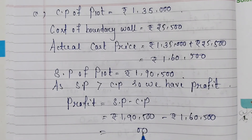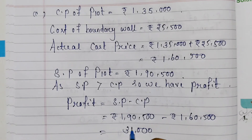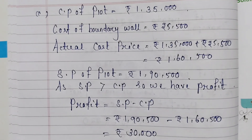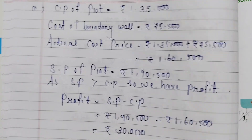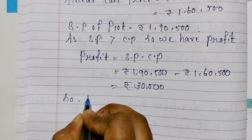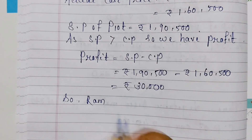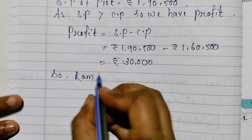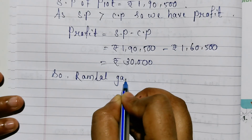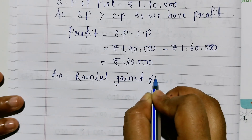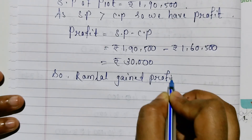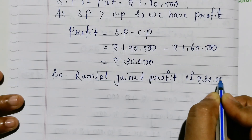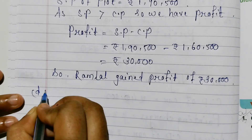Profit equals SP minus CP: 1,90,500 minus 1,60,500 equals 30,000 rupees. So Ramlal gets a profit of 30,000 rupees.